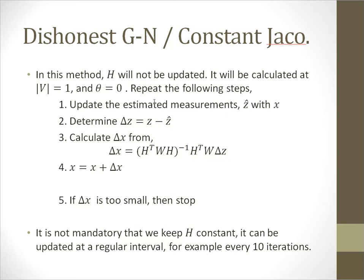It is not mandatory that we have to keep H constant throughout the process. It can be updated at a regular interval, for example every 10 iterations. As the calculation of the Jacobian matrix is difficult and time-consuming, we can keep it constant for some iterations or for estimation of one set of measurements.